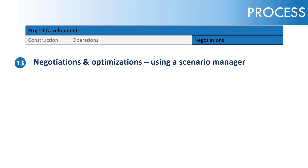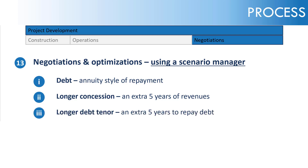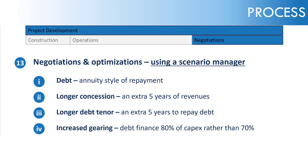To do that, we're going to use a scenario manager and look at five different cases. First, changing from a fixed style of repayment to an annuity style and how that affects things. Second, what happens with a longer concession — an extra five years of revenues. Third, a longer debt tenor — giving the project an extra five years to repay the debt, and what that does to the DSCR and equity IRR. Fourth, increased gearing — going up to 80% of capex rather than 70%. Finally, we'll look at all changes occurring simultaneously.